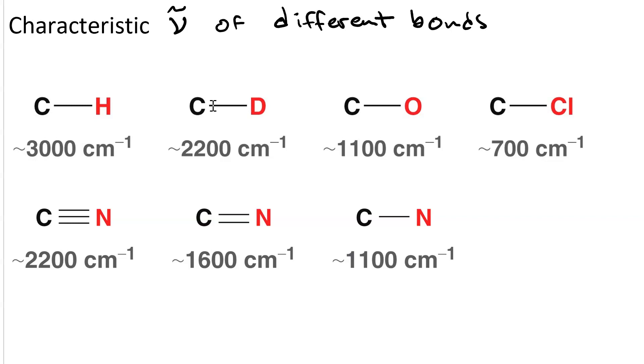However, the reduced mass is different. So if we calculate the reduced mass for each bond for C-H, we've got 12 times 1 over 12 plus 1. So the mass of a deuterium is 2, so the reduced mass here is 12 times 2 over 12 plus 2, which is 1.7.